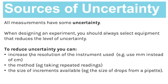We'll come back to one judgment versus two judgments shortly. Taking repeated readings can also be used to reduce uncertainty - I'll get to that later in this video where we talk about how taking repeated readings affects uncertainty. The size of increments available also matters - for example, the size of the drops on a pipette could have an impact. We're also going to look at one extra way you can reduce uncertainty by taking multiple combined measurements.